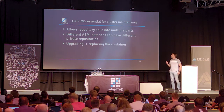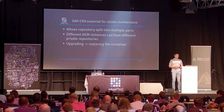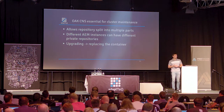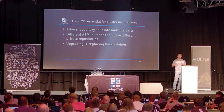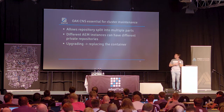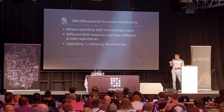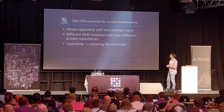Now, composite node store. It will be essential for this type of deployment, because the composite node store is the one that actually helps us have this separation between two repositories. It theoretically supports more than two, but in our investigations, we're using one which is basically private to the Docker instance, and all the rest. Its primary function is to allow the repository to be split into multiple mount points.